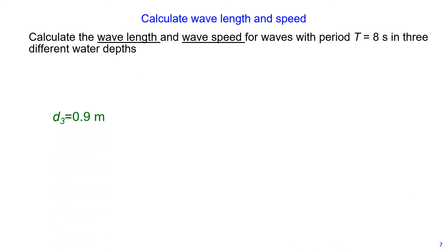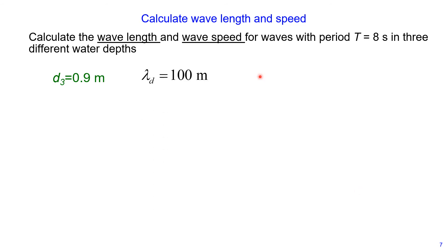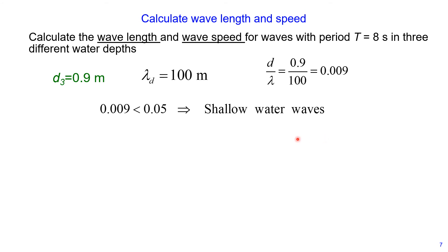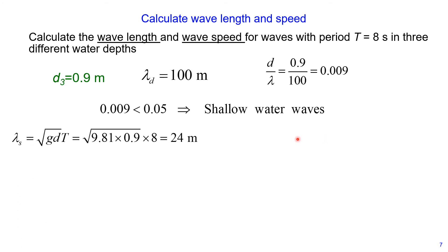For the final value of water depth, which is 0.9 meters, we start again with the deep water waves value of 100 meters. Then we calculate the ratio of water depth divided by wavelength, and this is 0.009, which is less than 0.05. Therefore, we have shallow water waves, and we use equations for wavelength and wave speed for shallow water conditions.